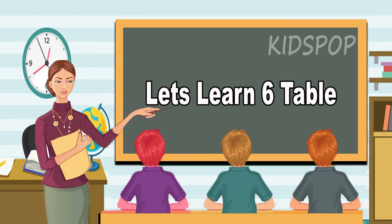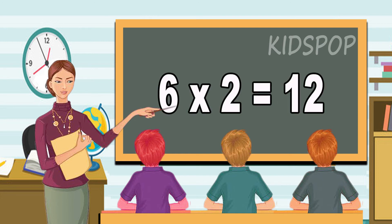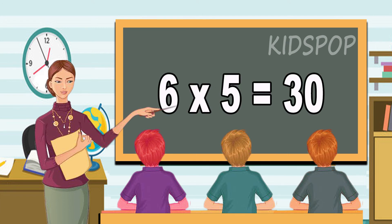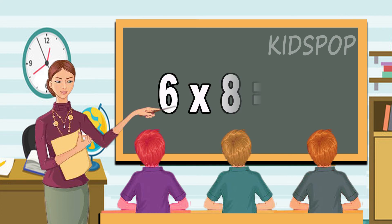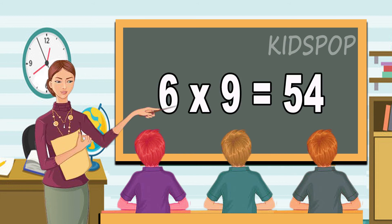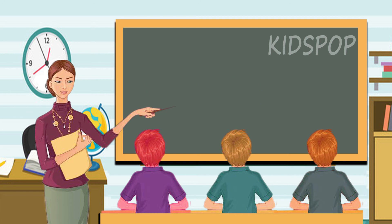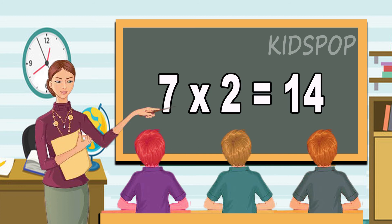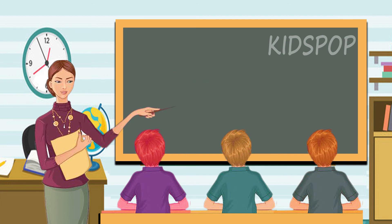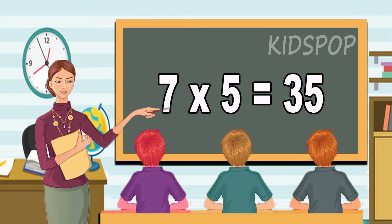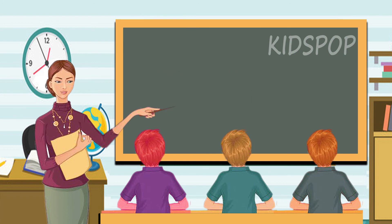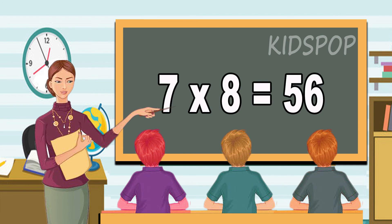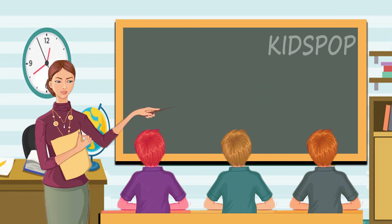Let's learn six table. Let's learn seven table. Seven sevens are forty-nine. Seven eights are fifty-six. Seven nines are sixty-three. Seven tens are seventy.